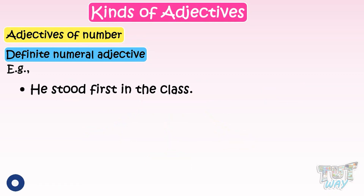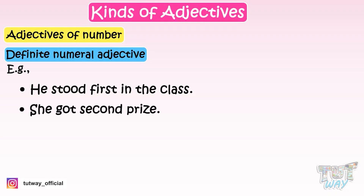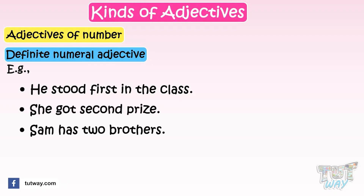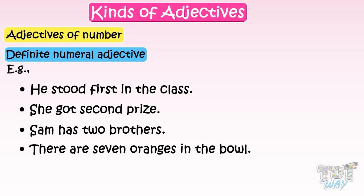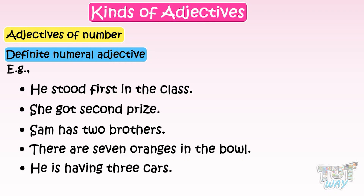Examples of Definite Numeral Adjectives in use: She stood first in the class. She got second prize. Sam has two brothers. There are seven oranges in the bowl. He is having three cars. So, Definite Numeral Adjectives tell us the exact number of people and things.